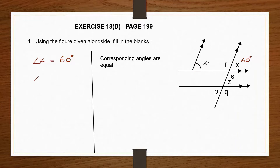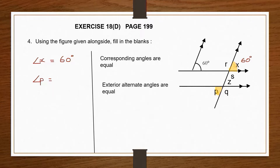Now we need to find angle P. Let's see how angle P is related to angle X, since that is the value we have. Angle X and angle P are exterior alternate angles — both are outside and alternate to each other. Exterior alternate angles are equal, therefore angle P is equal to angle X, which is 60 degrees.